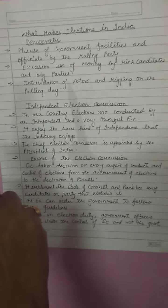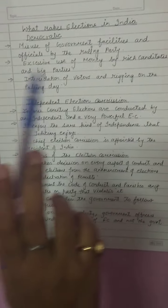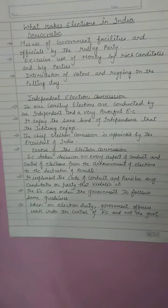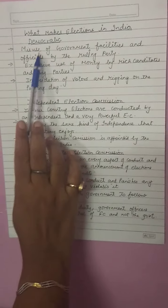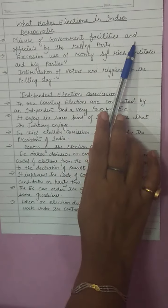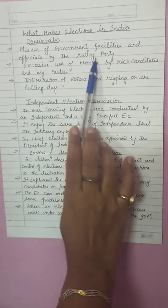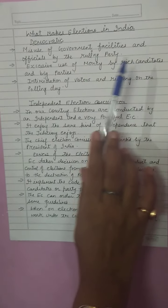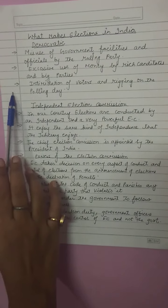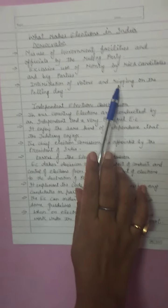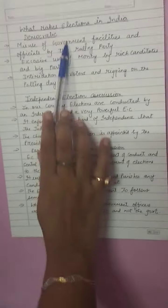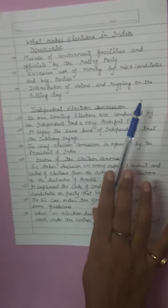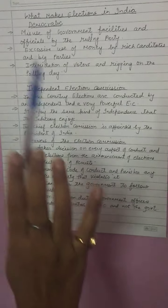Today we will continue the same chapter, electoral politics, and the topic is what makes elections in India democratic. The challenges include: first, misuse of government facilities and officials by the ruling party; second, excessive use of money by rich candidates and big parties; third, intimidation of voters and rigging on polling day — booth capturing, and use of money and muscle power.